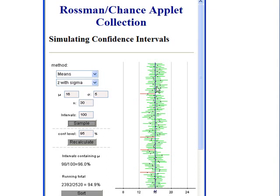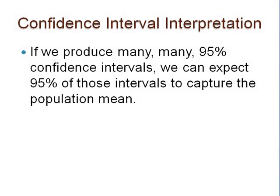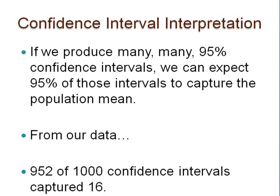We can properly interpret this situation by saying that if we produced many, many 95% confidence intervals, we would expect 95% of those intervals to capture the population mean. After producing the rest of the 1,000 95% confidence intervals from the weights example, I discovered that 952 intervals captured the population mean of 16. I am not surprised by this result.